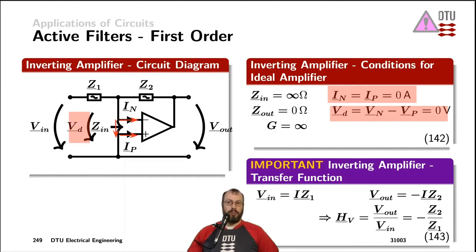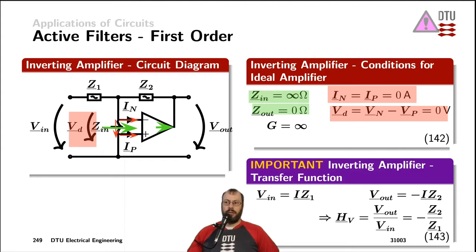The voltage, which is zero, is across those two nodes. Furthermore, the input impedance is infinite and the output impedance is zero ohms. The input impedance is what we see when we look in and measure the voltage — which is zero — divided by the current — which is also zero. The output impedance is the resistor at the output of the operational amplifier, which is zero. Furthermore, we assume an infinite gain of the voltage transfer function from the differential input voltage to the output voltage of the op-amp.